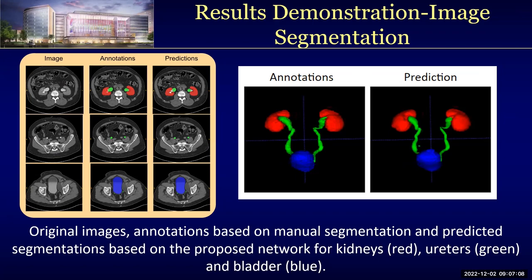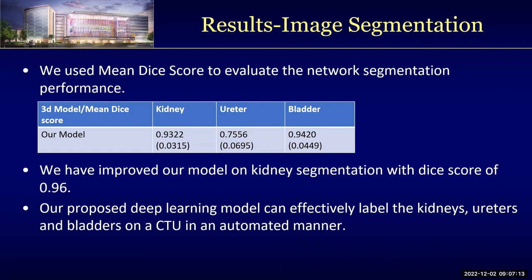To evaluate our model performance, we use the mean dice score, which shows the overlap between our predicted labels and the ground-truth labels. The higher the mean dice score, the better the model, with the best score being close to 1.0. Based on our model performance, for both kidneys and bladders, our model achieves a mean dice score above 90%.